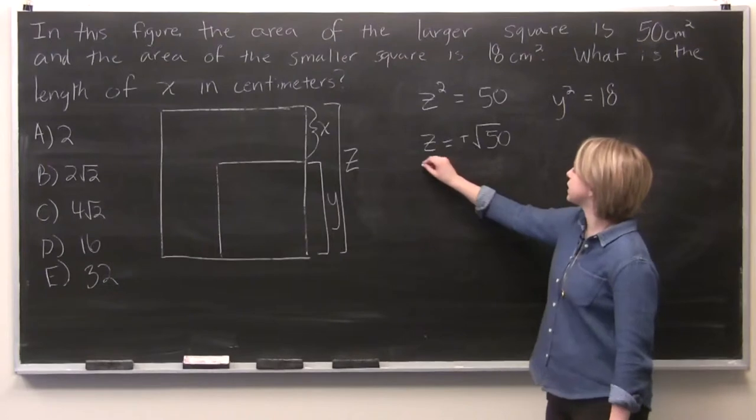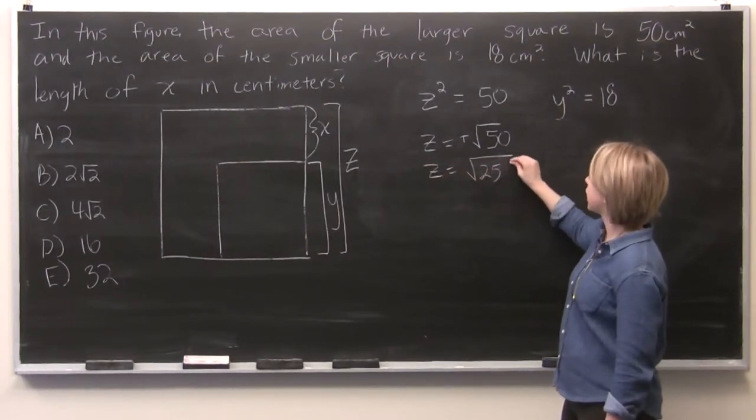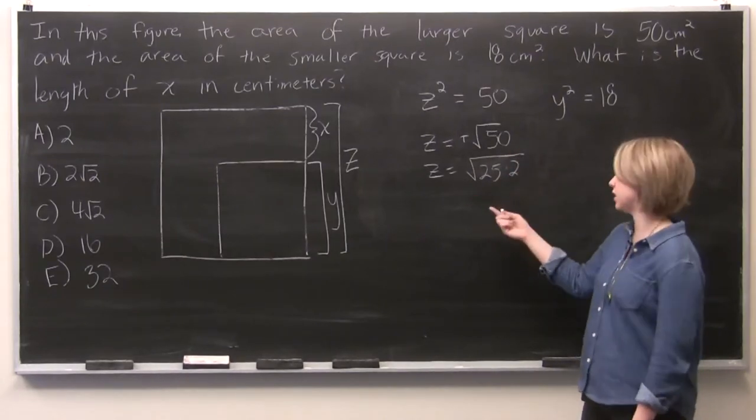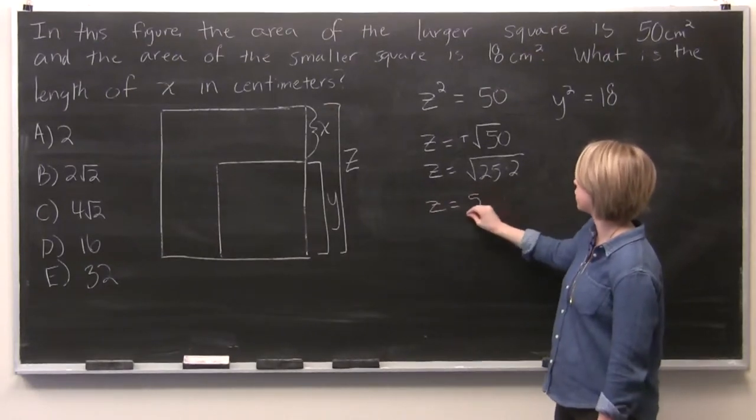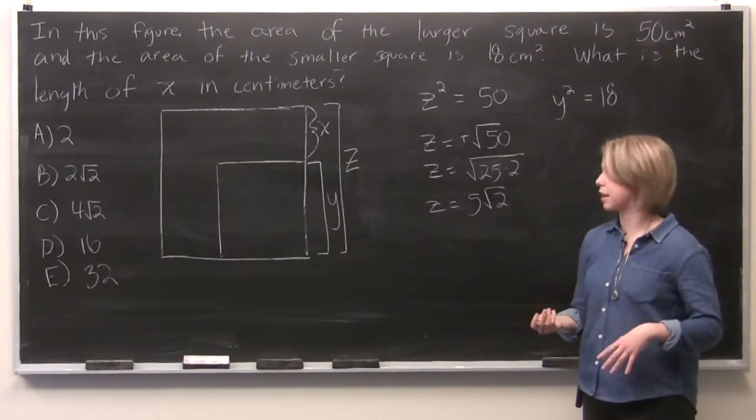So our z is equal to the square root of 25 times 2. And we can extract the square root of 25, which equals 5 times the square root of 2. So that's our z value. That's as simplified as we can make it.